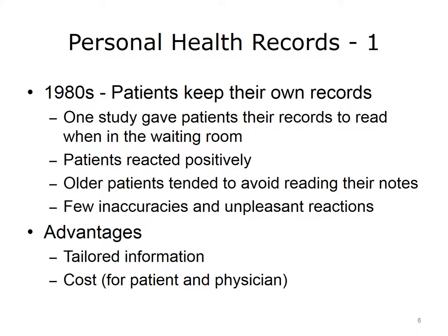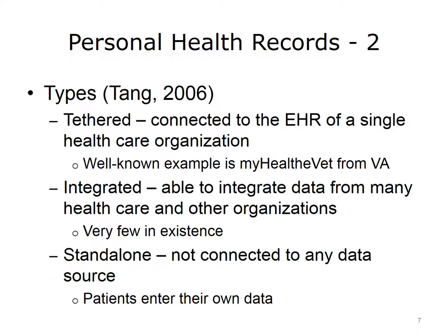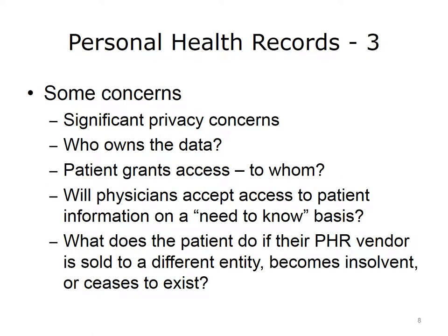There are some advantages associated with personal health records. The information is tailored and patient-centric, and there are reductions in cost for both the patient and the physician. It is important to understand the different types of PHRs. One type is the tethered PHR, which is connected to the EHR of a single healthcare organization — a well-known example is MyHealthyVet from the Veterans Administration. A second type is the integrated PHR, which integrates data from many healthcare and other organizations, though very few truly integrated PHRs exist. The final type is the standalone PHR, which is not connected to any data source, and patients enter their own data.